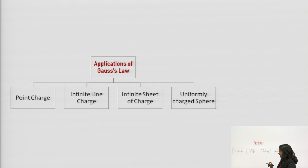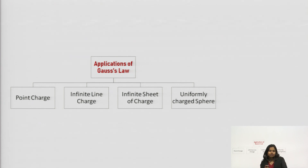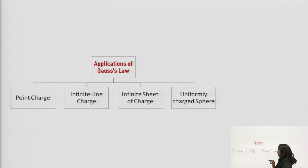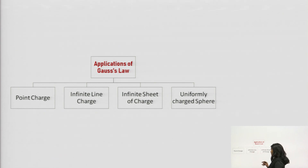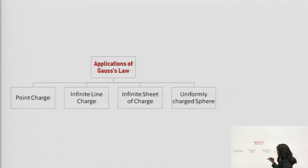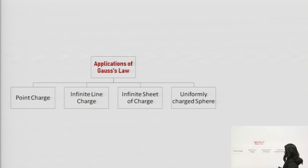Gauss law states that the total outward flux through a closed surface will be equal to the total charge enclosed. In every kind of problem, we need to draw one Gaussian surface. Gauss law can be applicable to find electric field due to infinite line charge. It can also be used to find the electric field intensity due to infinite sheet of charge and uniformly charged sphere.